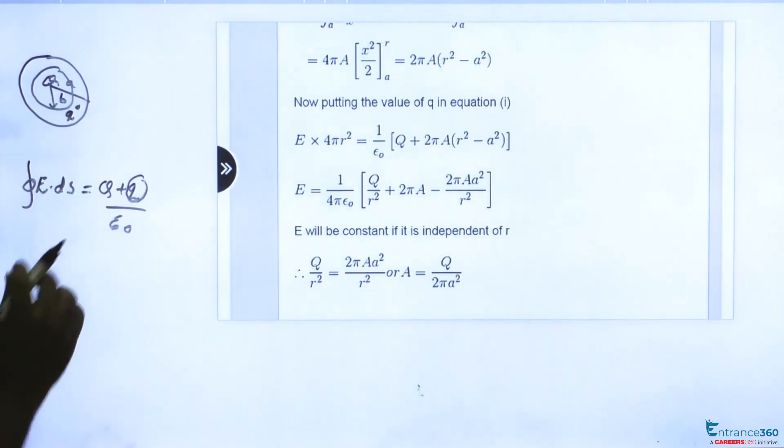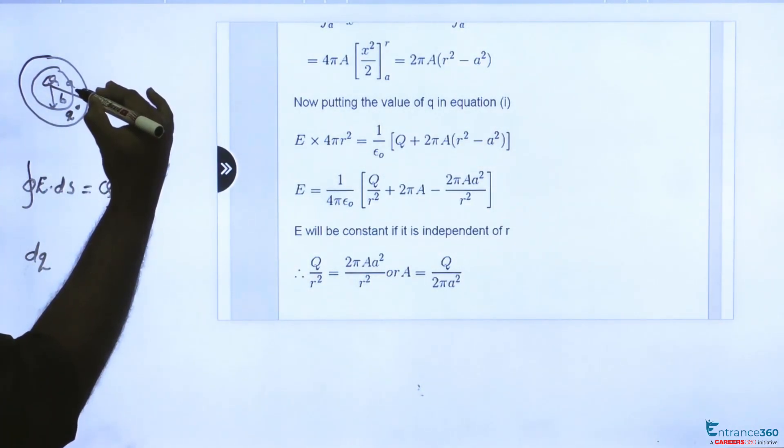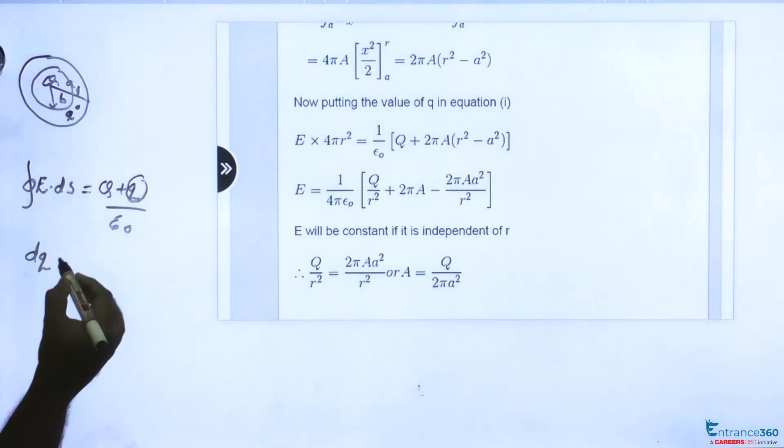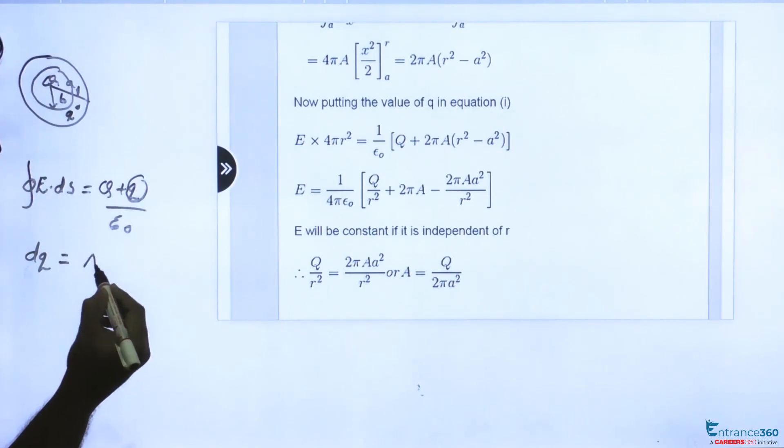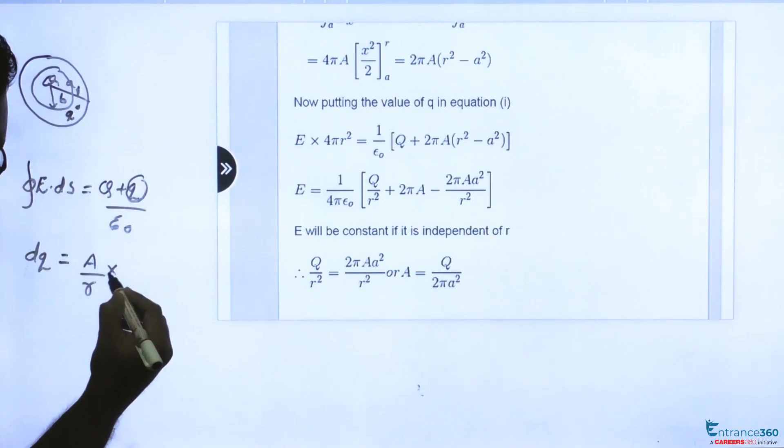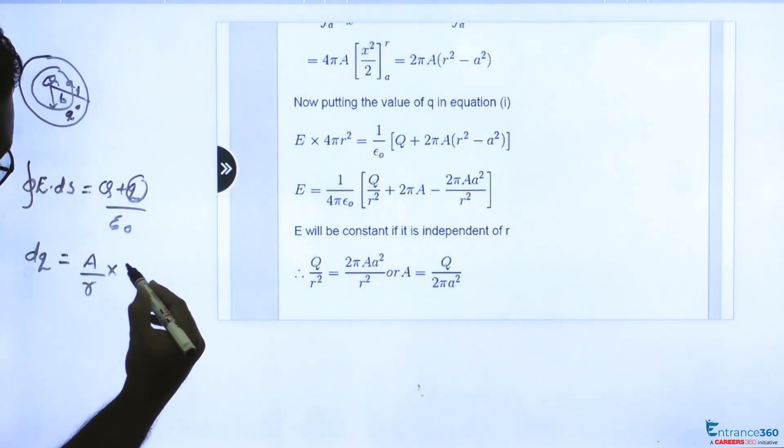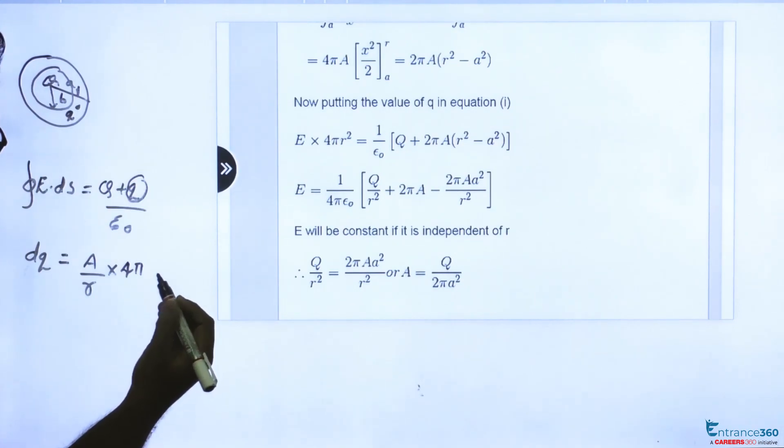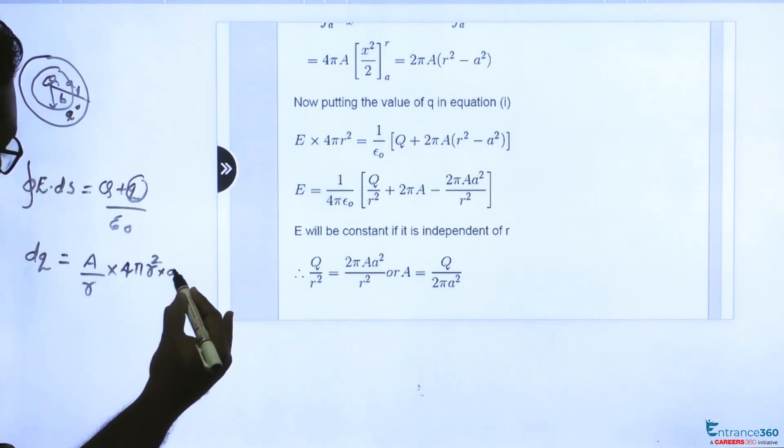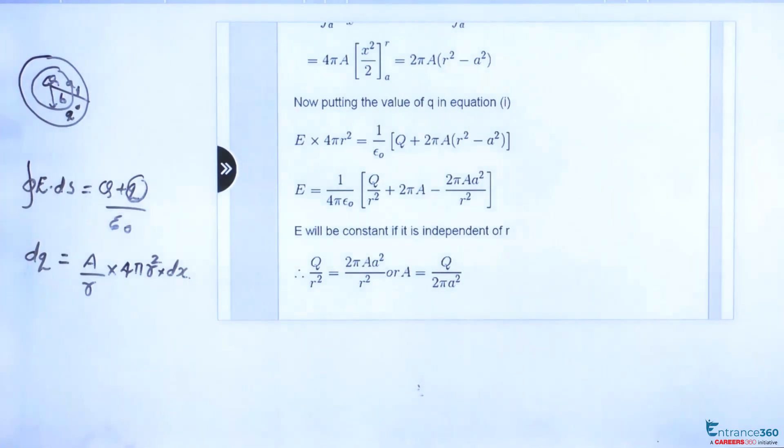So we can find, say let's consider a small charge dq or small area, or small portion here. Then charge equal to charge density into area, small portion. Let it be at a distance R, pi R square, into area, into length, small portion dx.